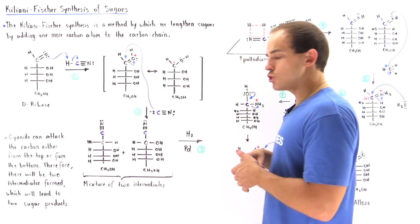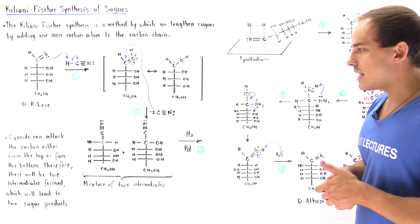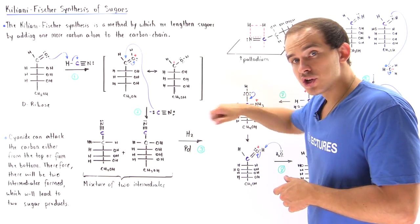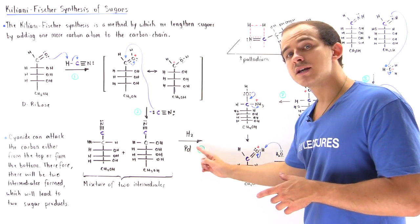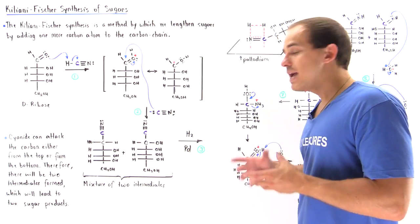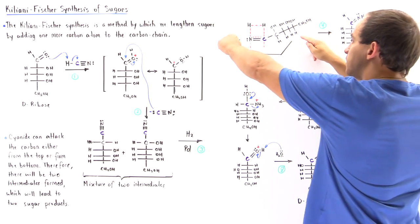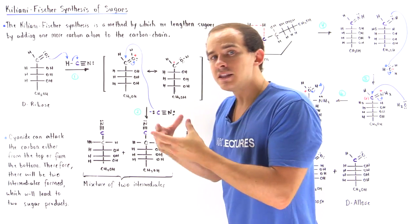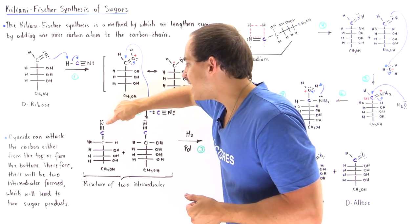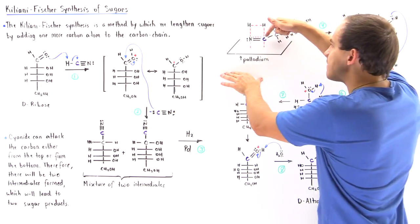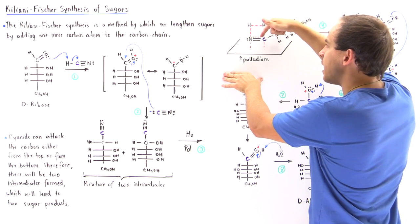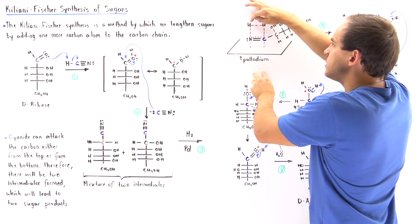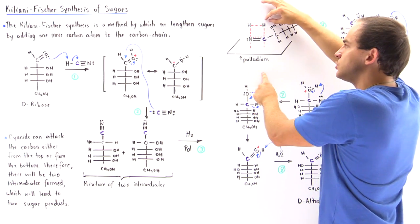In step three, we basically want to add our diatomic H2 molecule in the presence of palladium, where palladium is acting as the catalyst. We have the palladium metal, which basically interacts via van der Waals forces with this carbon-nitrogen bond, weakening one of our pi bonds between the nitrogen and carbon and the weakening between the sigma bond between these two H's.